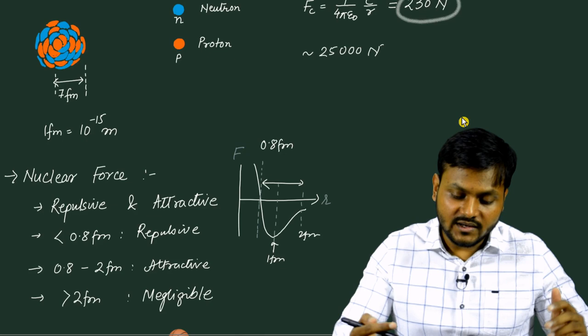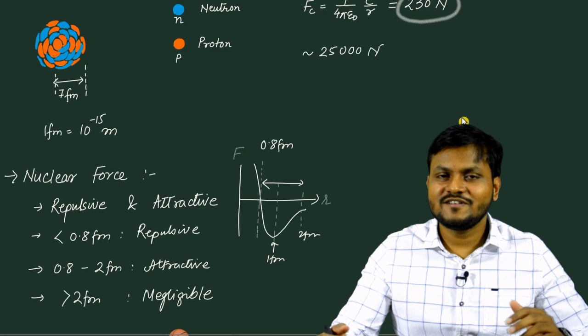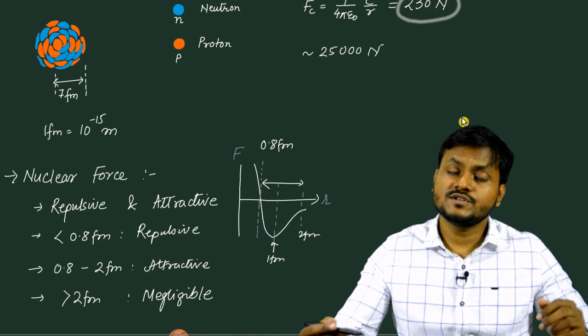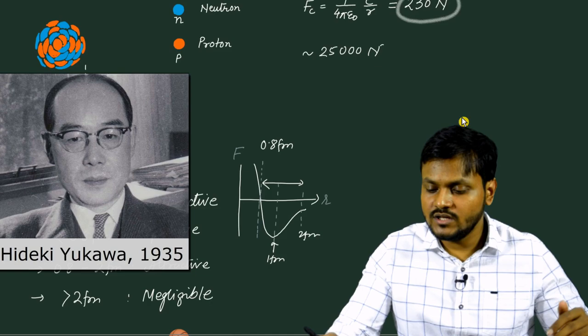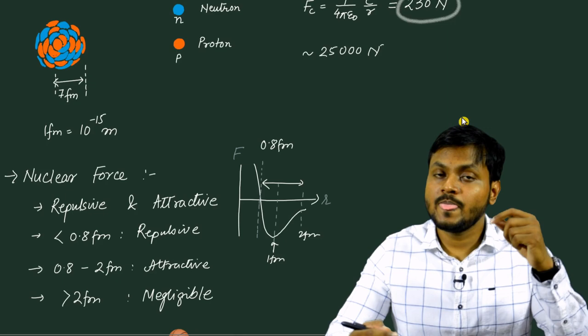This nuclear force acts between all particles: it acts between neutron and neutron, between neutron and proton, and between proton and proton. So the nuclear force shows attractive as well as repulsive nature depending upon the distance, and it exists between all kinds of nucleons. One of the first successful theories to explain this behavior of the nuclear force was given in 1935 by a Japanese scientist by the name of Hideki Yukawa. Yukawa gave what is today known as Yukawa's theory of nuclear force, or the Meson theory of nuclear force. He basically said that the nuclear force exists as a result of exchange of particles — meaning that neutrons and protons are continuously emitting or absorbing another particle known as a Pi Meson.